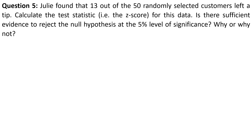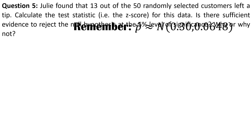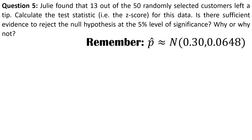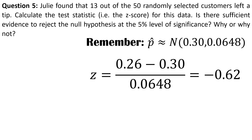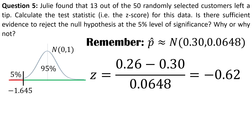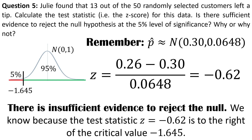Turning to data, we have 13 customers out of 50 who left a tip. The sampling distribution for P-hat under the null hypothesis has a mean of 0.3 and a standard deviation of just over 6%. P-hat is 13 divided by 50, which is 0.26. Standardizing, we get a test statistic of minus 0.62. Keeping the decision rule in mind, we will fail to reject the null hypothesis because our test statistic is to the right of our critical value — it's in the zone where we will not reject the null hypothesis.